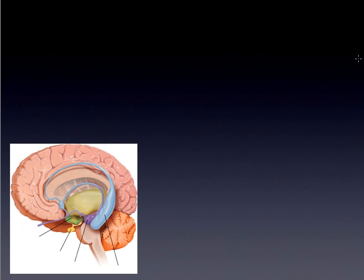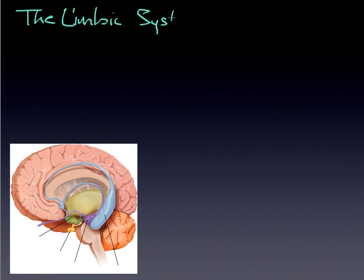We have one more major system to look at in the brain itself, and it is the limbic system. Most of the time in most of your operations, you use the limbic system quite a bit. It is composed of various component parts, and 'limbic' itself oftentimes means 'border' — it runs along the border between the two hemispheres, but it's made up of specific components I want to spend a little time talking about.